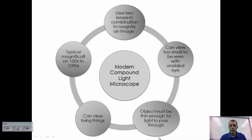You have the ability to see living organisms with the compound light microscope, and the typical magnification is anywhere between 100 to 1000 times.